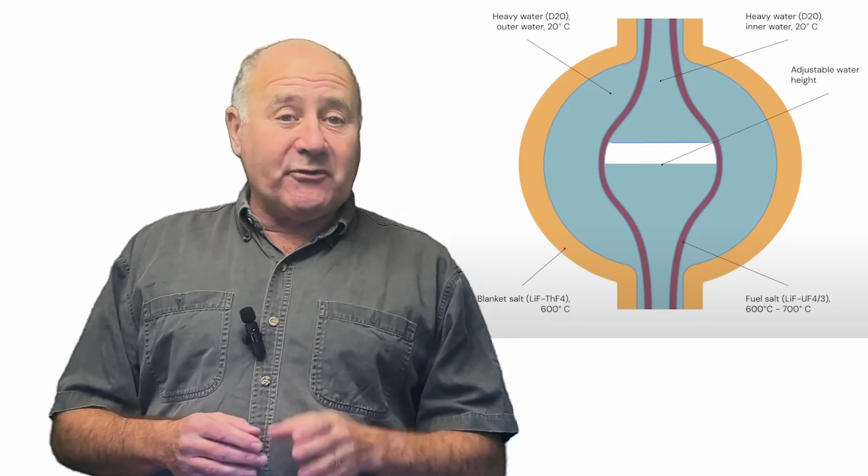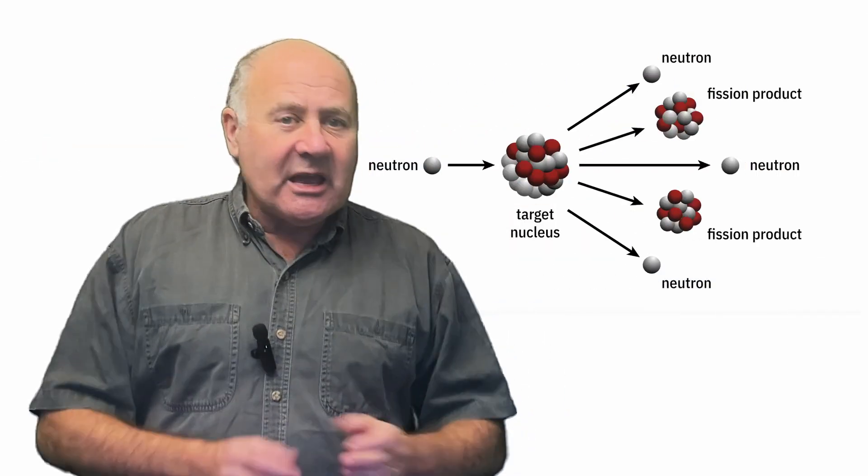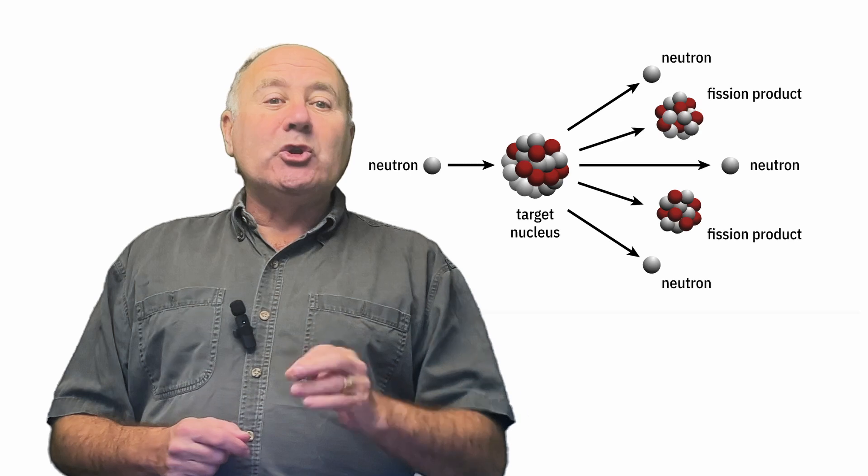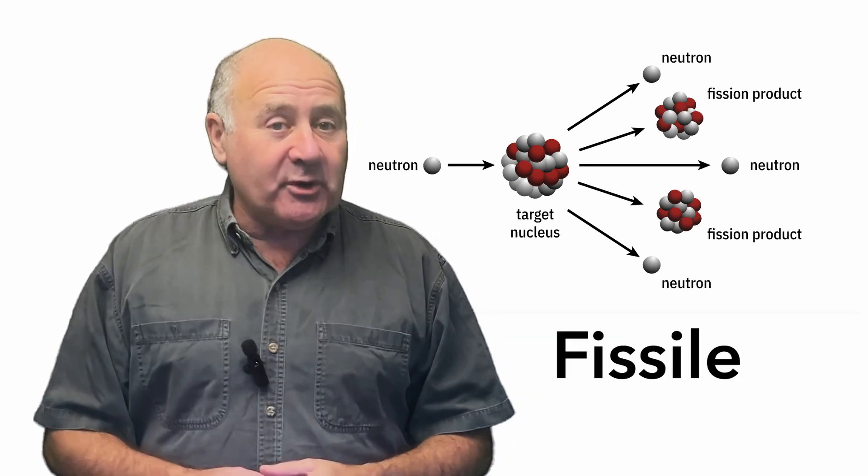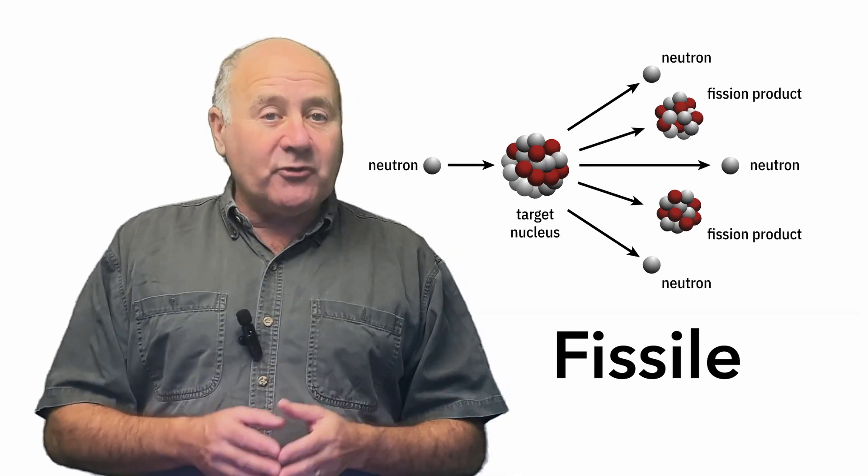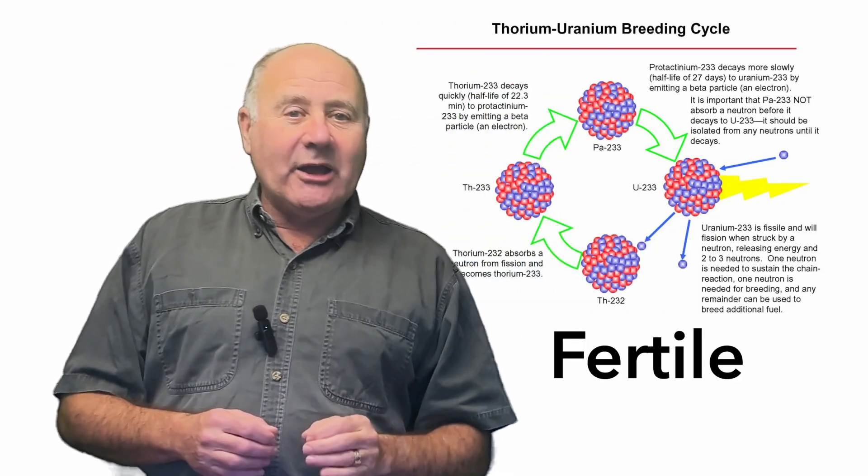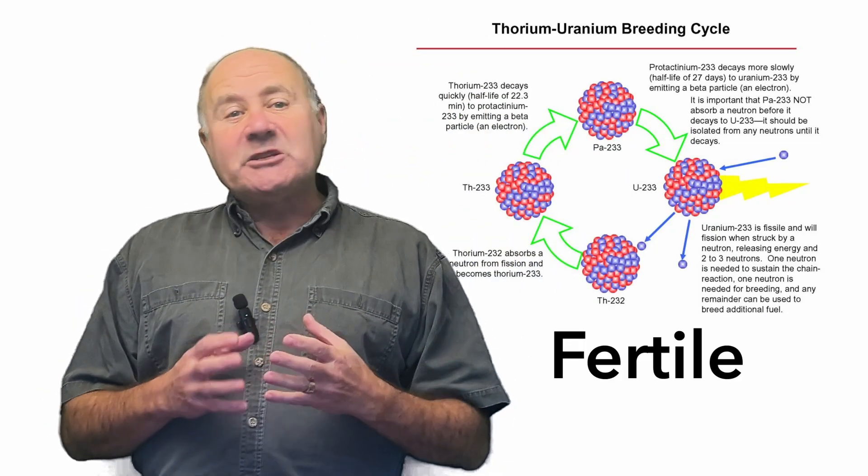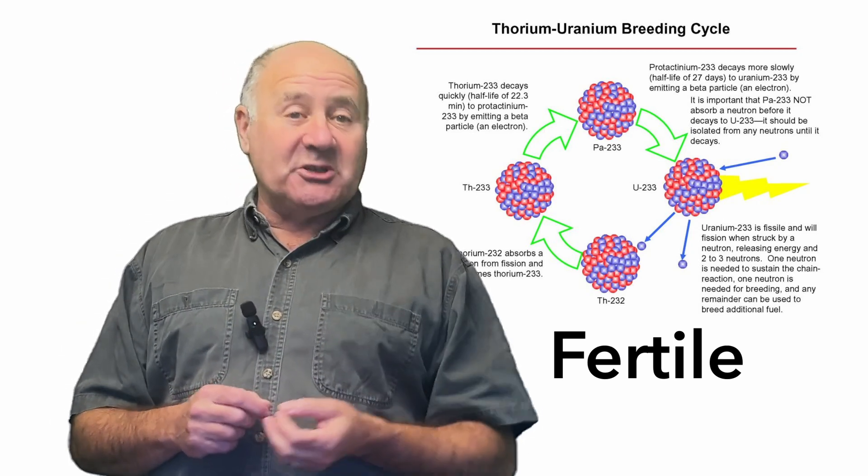Let's start with the difference between fissile and fertile. If a neutron hits a nucleus and it splits, releasing more neutrons and energy, then the nucleus is fissile. Examples are uranium-235 and plutonium-239, both of which are important fuels in pressurized light water nuclear power plants. Fertile nuclei are ones that when struck by a neutron, absorb it, and transmute or convert the nucleus into a fissile isotope.